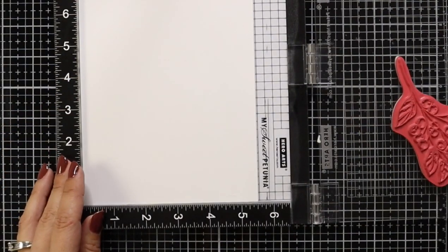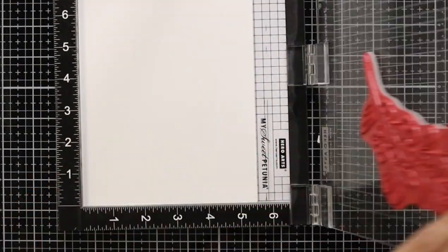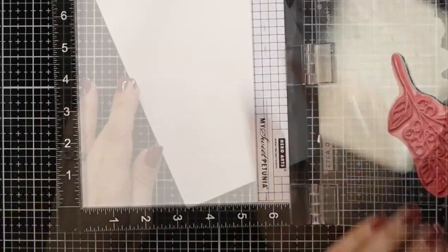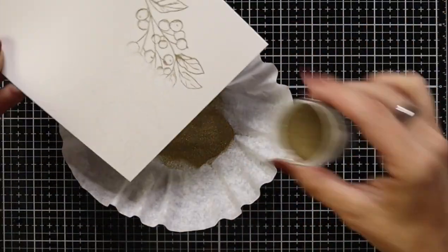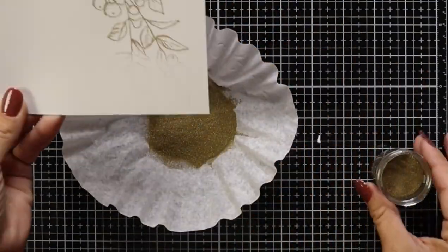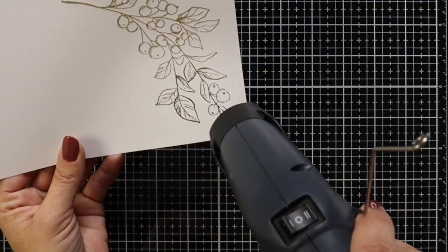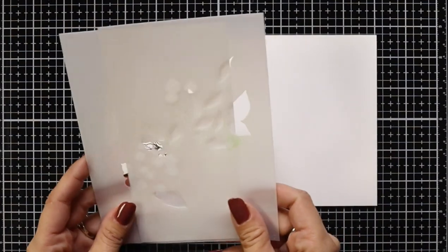Or as you can see here, you can also heat emboss this. So once I had cleaned the stamp, I did stamp that in VersaMark ink. I have prepped the cardstock with an anti-static powder tool first and then after I stamped it, I'm sprinkling on gold embossing powder and after my heat gun is nice and hot, I'll bring that over and I can heat emboss this. So a couple different ways that you could use this.